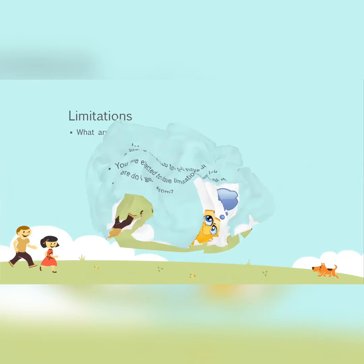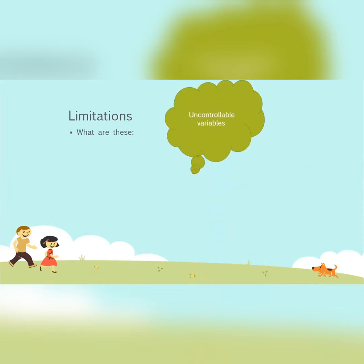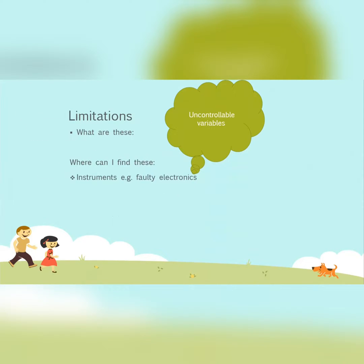What are limitations? That's the first thing to look at. Limitations are really uncontrollable variables. Variables are things which affect your experiment, but limitations are the ones which you really cannot control — to some extent there's nothing you can do about them, but they will still affect your experiment. So where can we find these uncontrollable things?